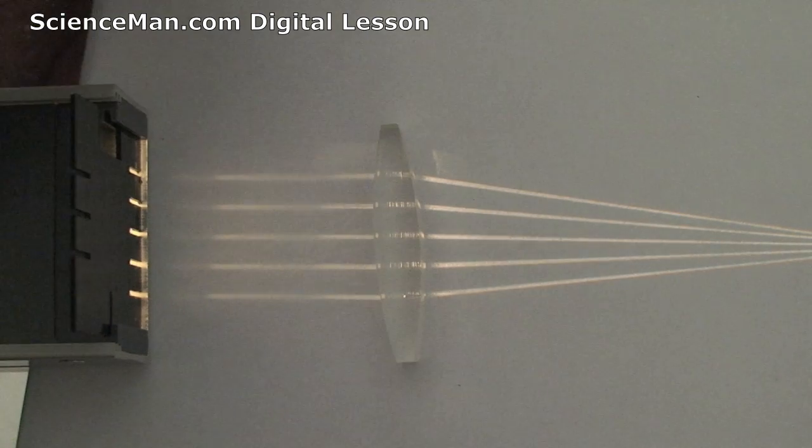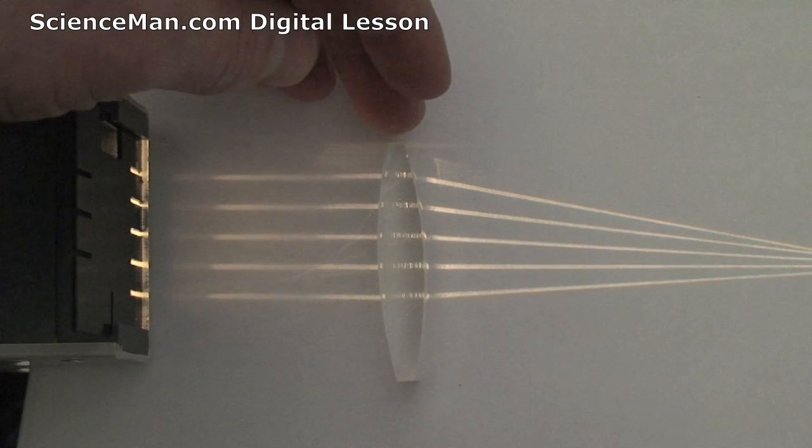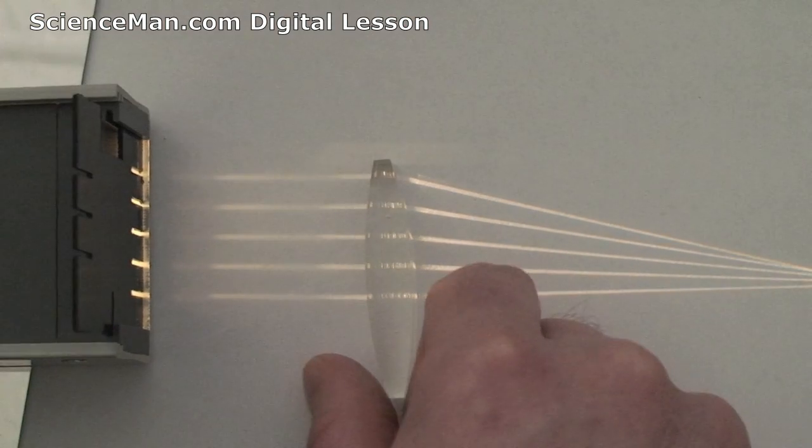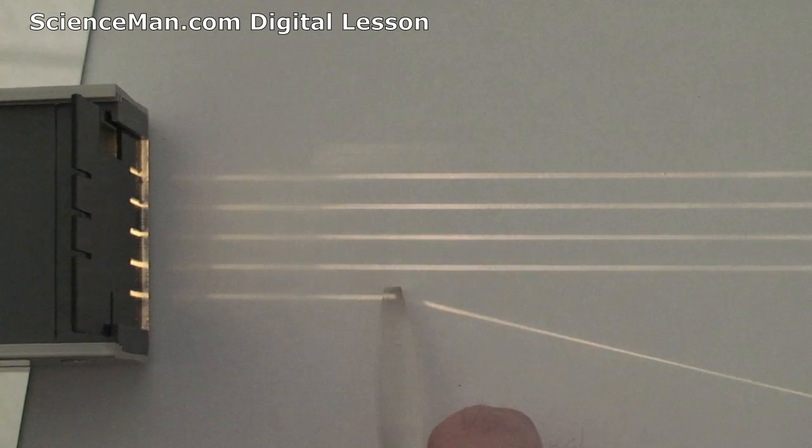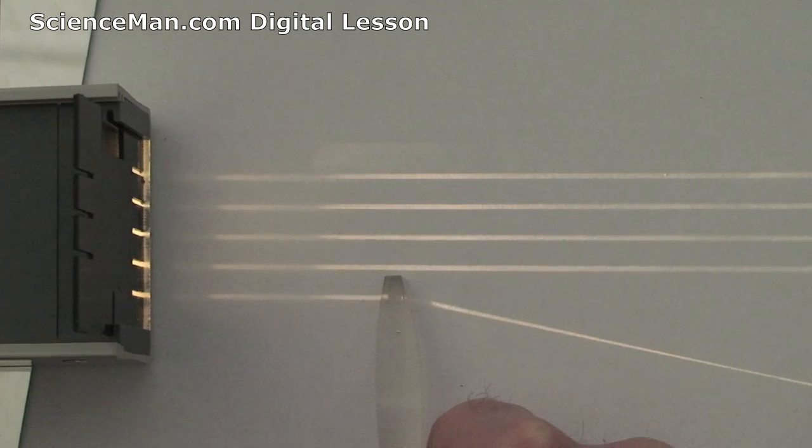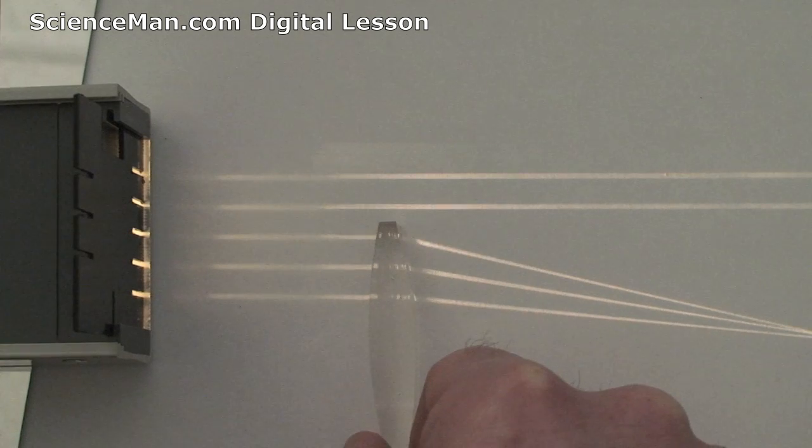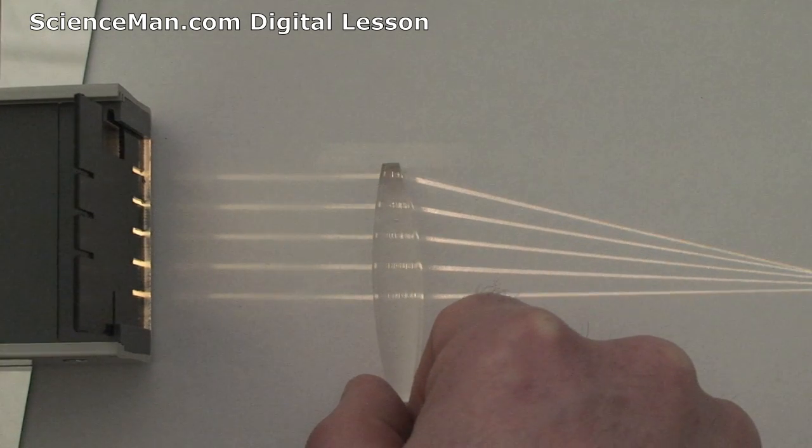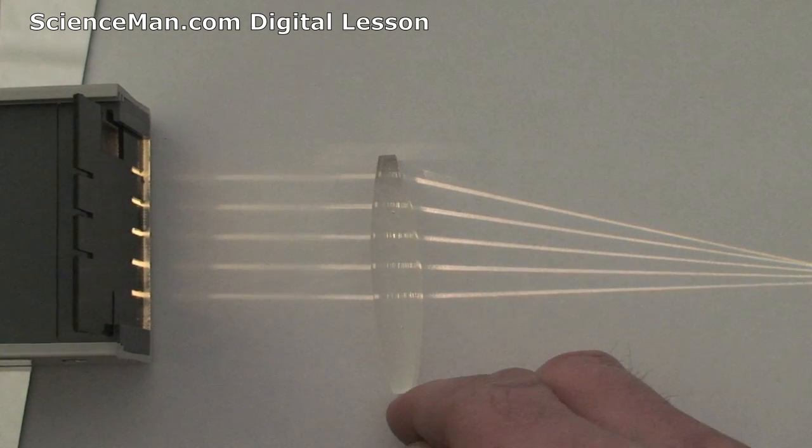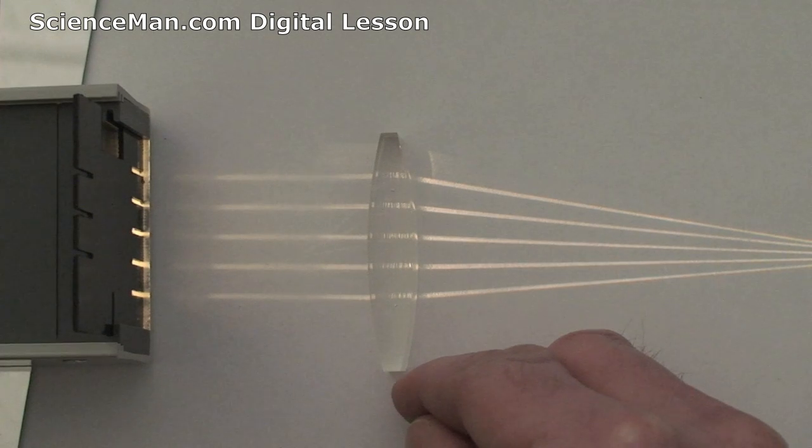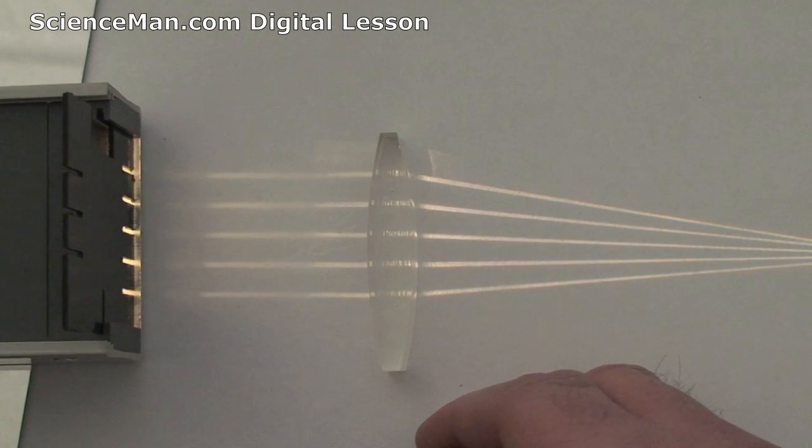You get the most amount of bending of the light where there's the greatest amount of curvature or where the light beam hits at the greatest angle. Again, watch the convex lens being placed into the beams of light and you will see the light beams bend, and that's because the light striking a different density medium at an angle.